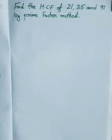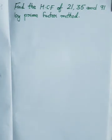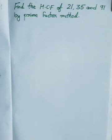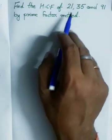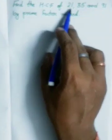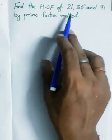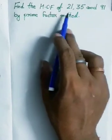Hello viewers, today we learn how to take out the HCF of 21, 35 and 91 by the prime factor method. HCF is the highest common factor — the highest number which divides all the given numbers 21, 35 and 91.